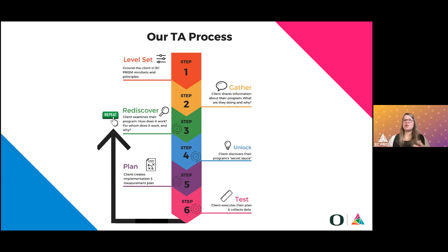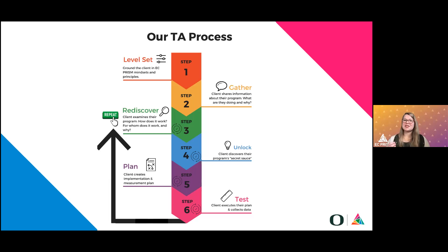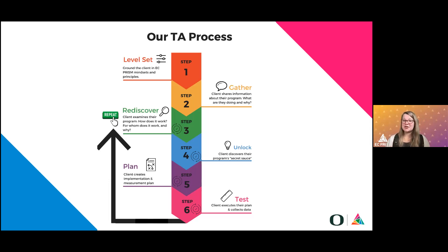Our TA process starts with leveling set — sharing our mindset on measurement and evaluation. Once we're speaking the same language, we ask: what is the 'why'? What are you trying to accomplish? What's the root you're trying to address? Then we rediscover — examining who your program works for and who it doesn't, unlocking the program's secret sauce: what are you doing that nobody else is doing that's causing impact? From there, we help you plan: what's your implementation plan, measurement plan, and evaluation plan? We can also help with testing — how will you execute and collect data — and then iterate back through the process.